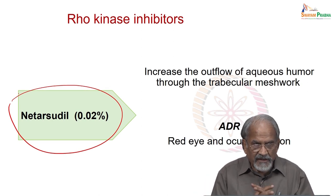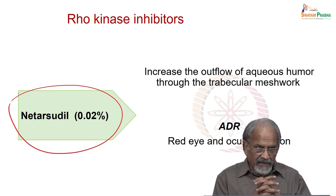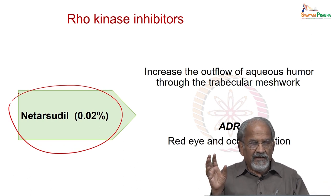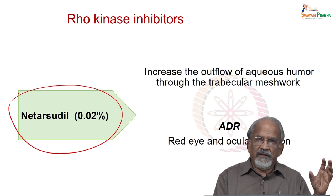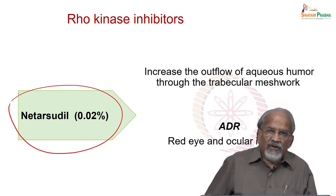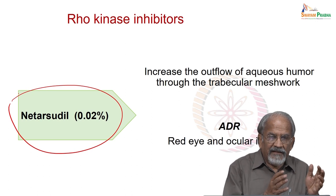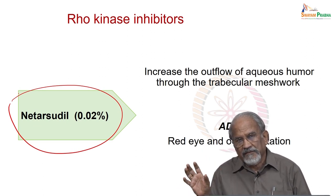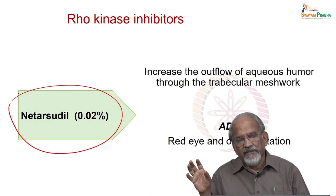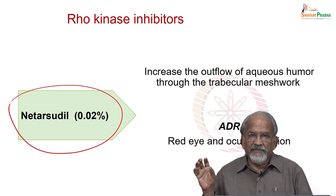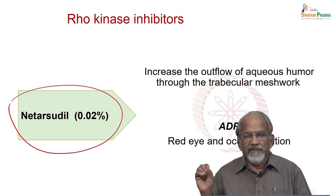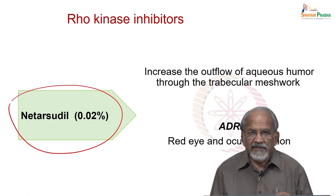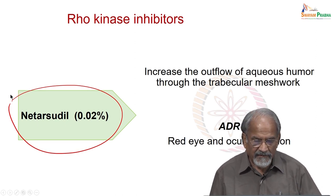To summarize the drugs for intraocular pressure: there are two types — those for reduction of aqueous humor production and those for increasing outflow. Reduction in aqueous humor production is by beta receptor blocking agents (timolol is most commonly used), carbonic anhydrase inhibitors, and alpha-2 agonists. Drugs which increase outflow are prostaglandin analogues and cholinergic/parasympathomimetic drugs like pilocarpine. These drugs are often given in combination, treatment is of longer duration, and finally sometimes surgery is required. Thank you very much.